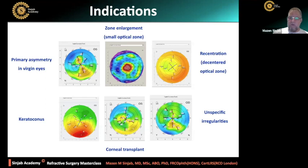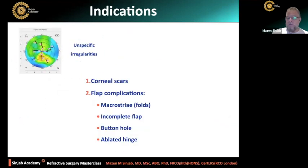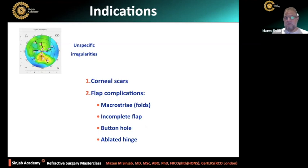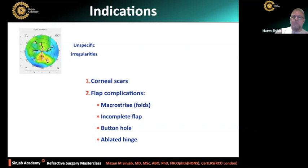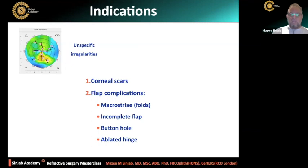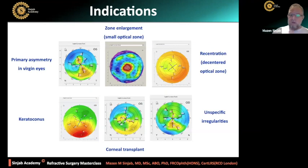The unspecific irregularity happens because of corneal scars or flap complications after LASIK, like macrostriae or folds, incomplete flap, buttonhole, ablated hinge. It is called unspecific irregularity because it doesn't take a pattern — you'll find more than one pattern. You may find inferior steep with superior steep, or multi-spots of steepness. So it is unspecific because it doesn't take a specific shape, while others take specific shape.